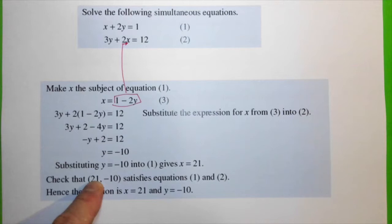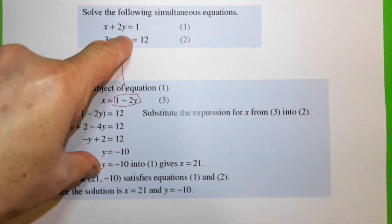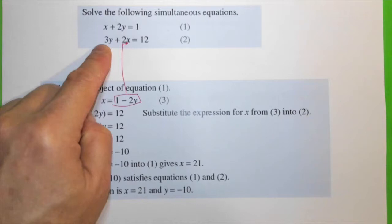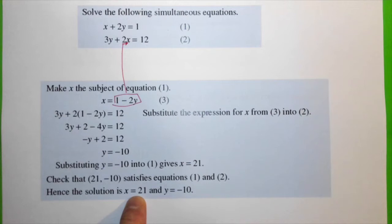We need to check that this satisfies equation 2 as well. 3y: y is minus 10, that's minus 30. 2x times 2 times 21, that's 42. Minus 30 plus 42 gives us 12. Therefore, the solution of x equals 21 and y equals minus 10 is the correct solution.